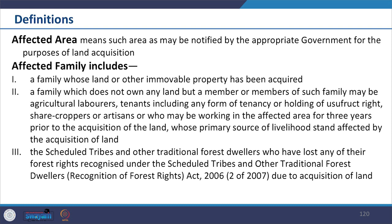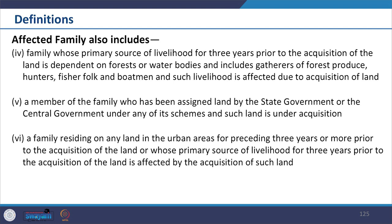Affected family further includes scheduled tribes and other traditional forest dwellers who have lost any of their forest rights recognized under the Scheduled Tribe and Other Traditional Forest Dwellers Act; families whose primary source of livelihood for three years prior to acquisition is dependent on forest or water bodies, including gatherers of forest produce, hunters, fisher folk and boatmen; a member of a family assigned land by the state or central government under any scheme in such area; and a family residing on any urban land for the preceding three years or more prior to acquisition.